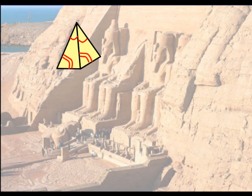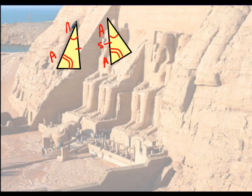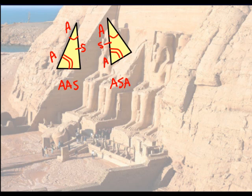Here's another example where the two triangles share the same side. On the right triangle, that's angle-side-angle. But if you look at the left triangle, the side in question is not between the two angles — it's on the side. So the left triangle has angle-angle-side and the right has angle-side-angle. Both are used to show congruence, but the problem is they're not the same arrangement, so we can't say that these triangles are congruent.